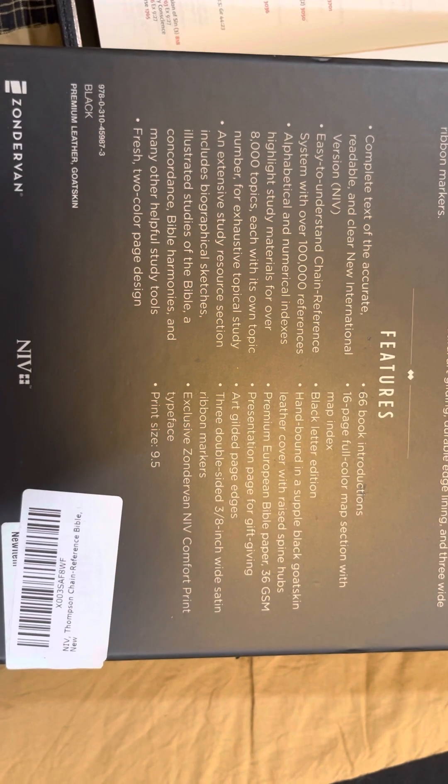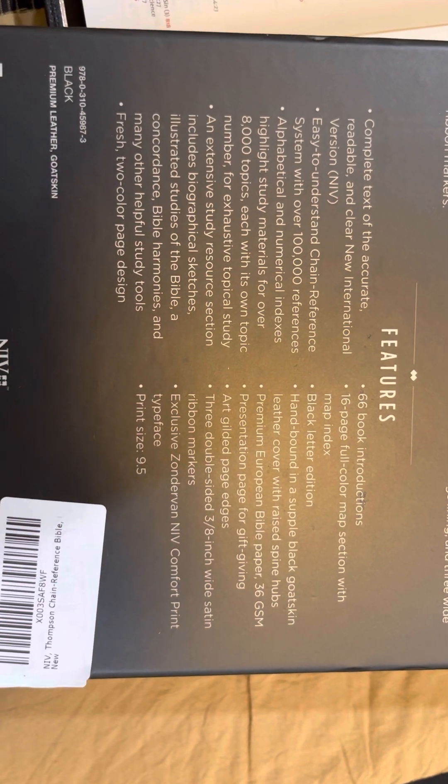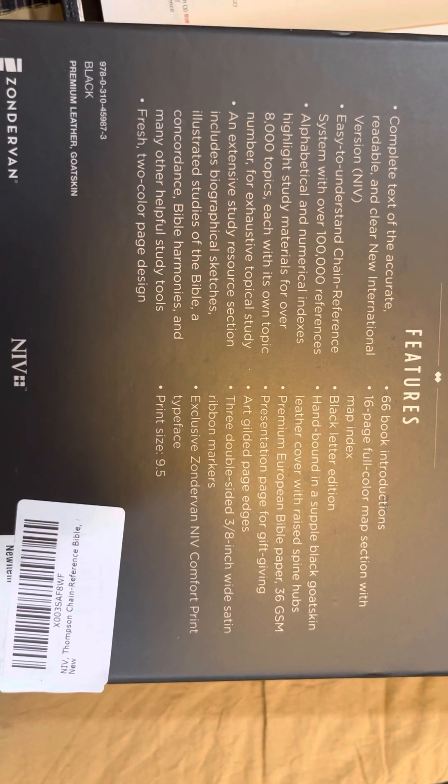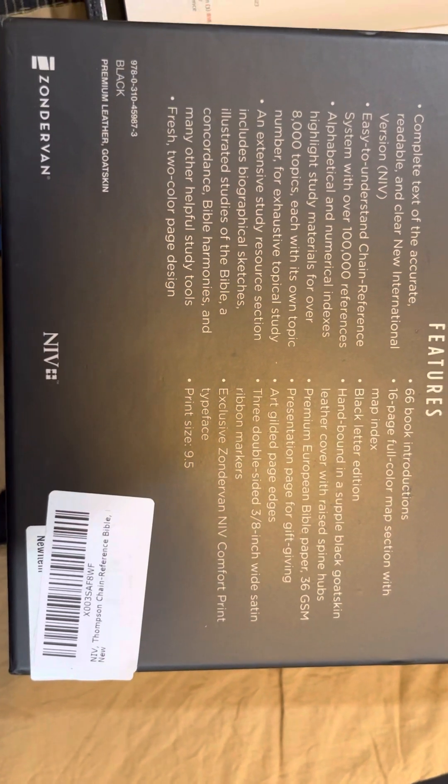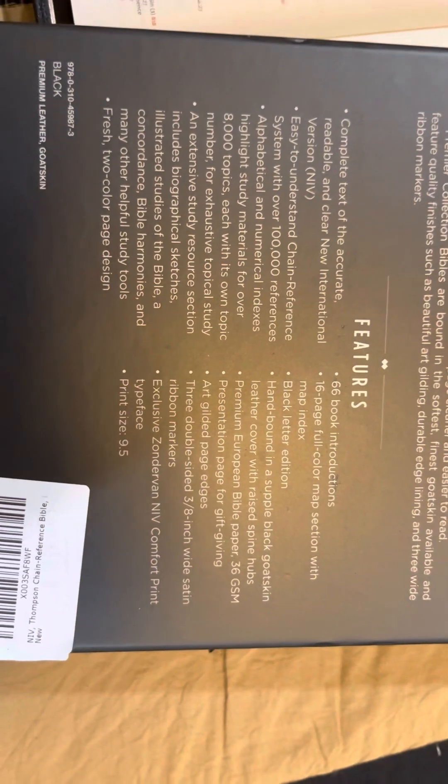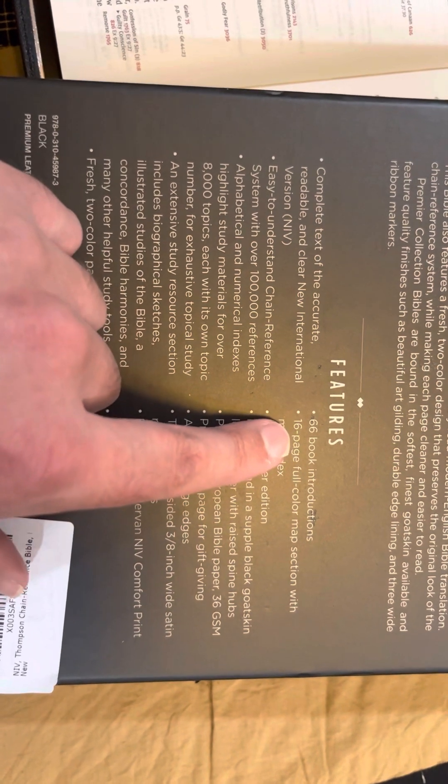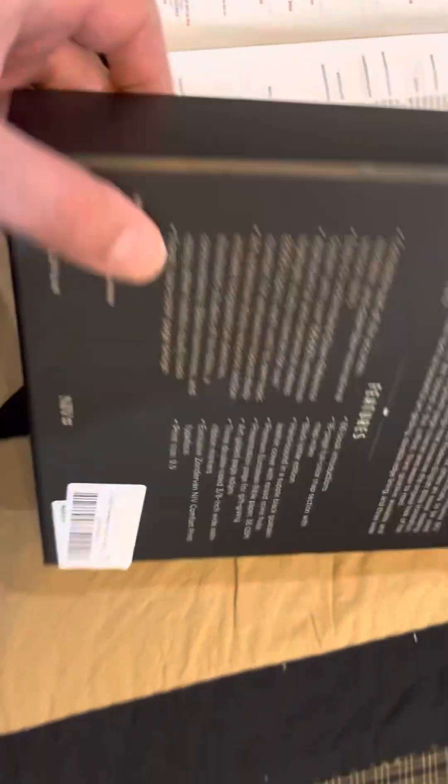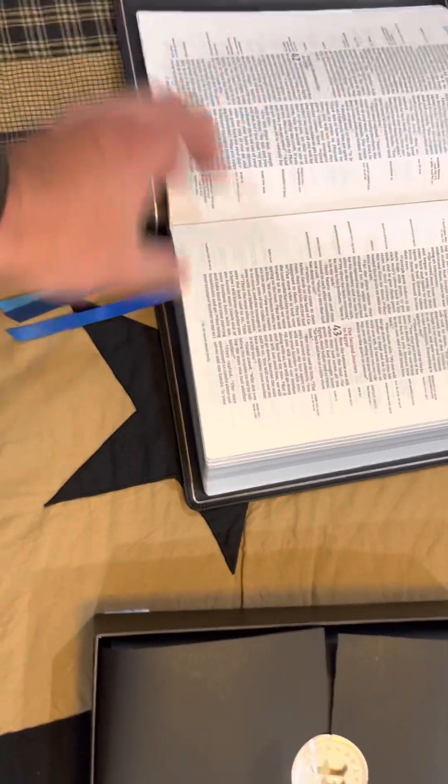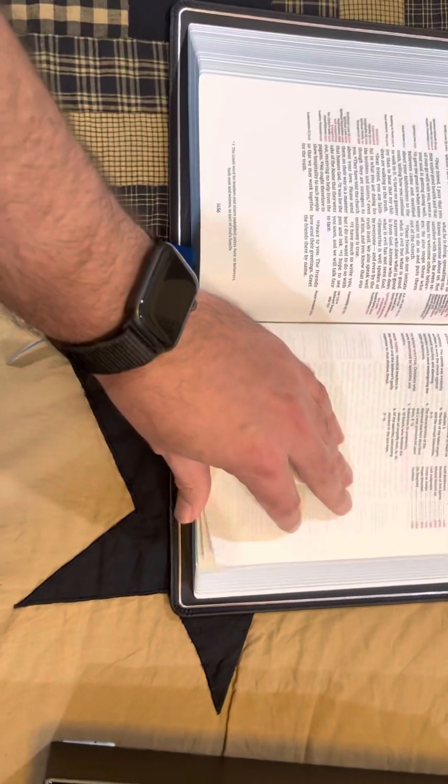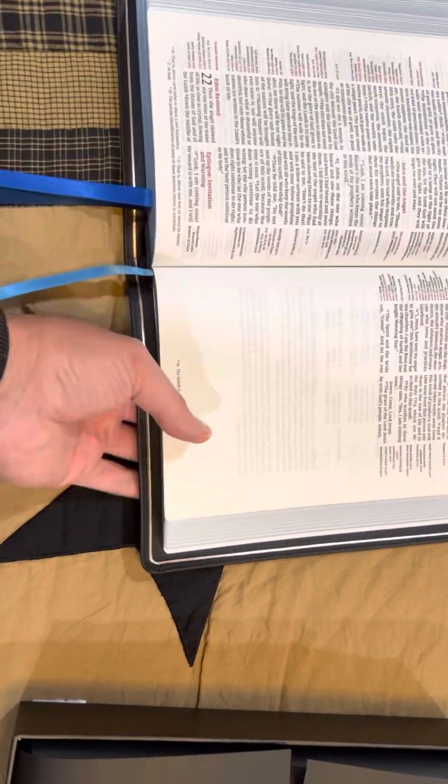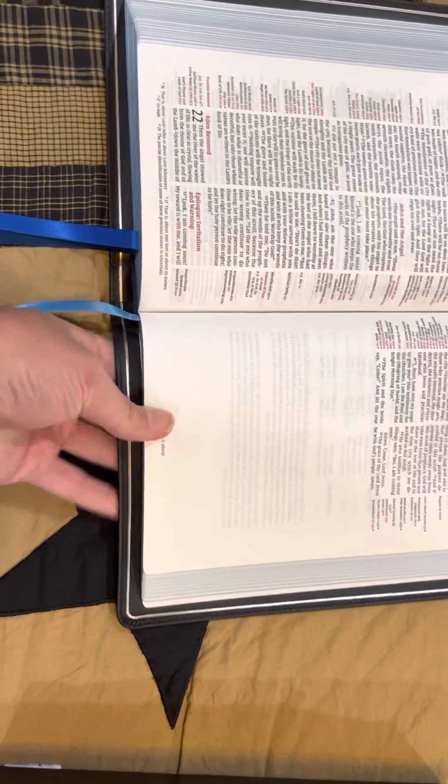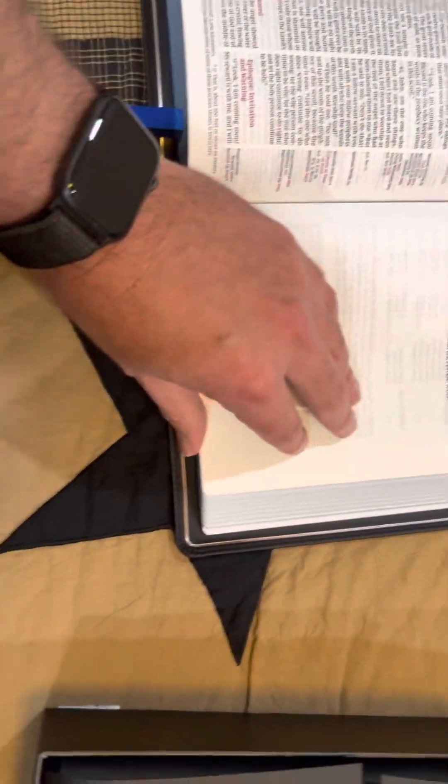We got a hundred thousand references with the Thompson chain reference. I want to say this is on sale on Amazon for about $130, great price for a premium. 16 page full color map section, black letter edition. Another nice thing about having a Thompson chain reference is you could be way over here in Jude or Revelation and you got more pages left. It's a balanced Bible. It's not wanting to slam shut or anything.